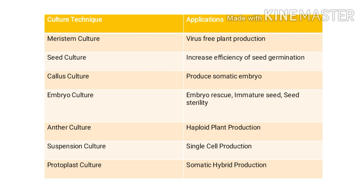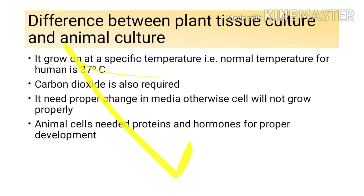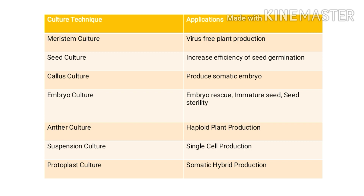In CSIR exams, you will have match-the-following questions where one side gives different culture types and the other side gives applications, and you have to choose the correct match. So you need to know the one-line application for each particular culture. In terms of embryo culture, it is used for the production of immature seeds or to overcome seed sterility. When embryos are sterile and you cannot get fertile seeds, in that case you perform embryo culture.